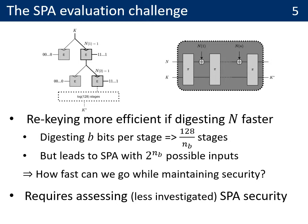If we can digest NB bits per stage, then we only need 128 divided by NB stages. This leads to a trade-off, because doing so also leads to an SPA with 2^NB possible inputs, raising the question: how fast can we go while maintaining side-channel security? Essentially, this requires assessing the less-investigated SPA security of the construction.